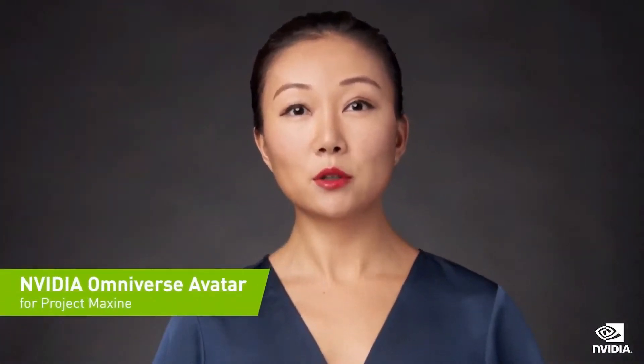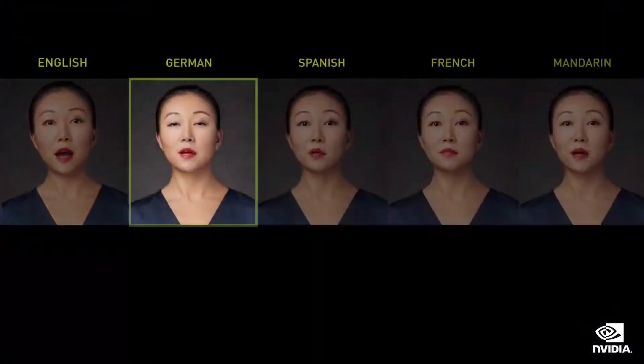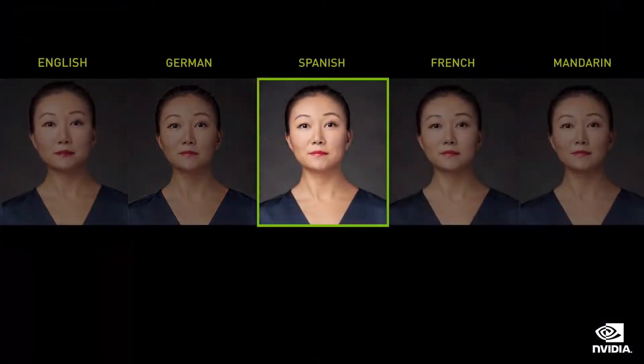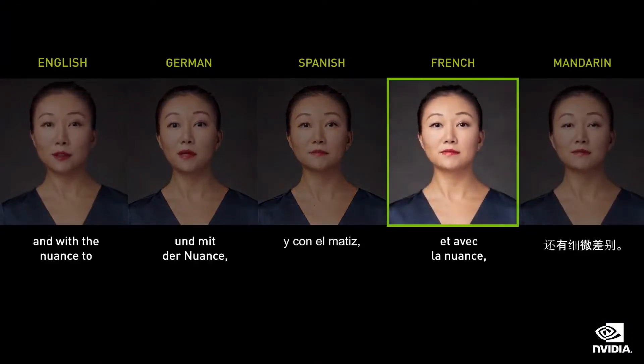Maxine is a remarkable innovation, built to advance how we collaborate in this brand new online world of ours. With Maxine, you can speak several languages. Riva converts the text to speech in those languages. Omniverse takes over and converts the speech to 3D facial animation. Alex's German, French, and Spanish-speaking avatars are streamed simultaneously.